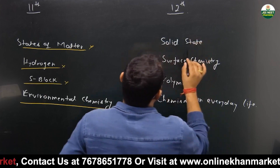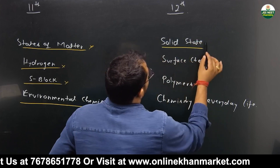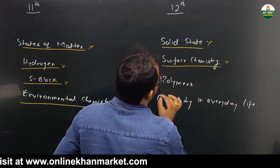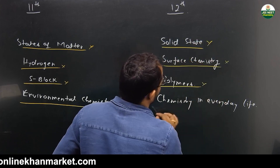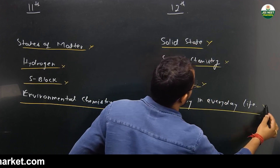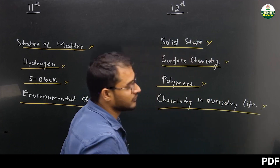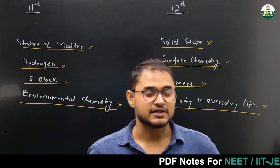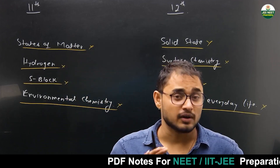The 4 chapters removed from the 12th part are: Solid State, Surface Chemistry, Polymers, and Chemistry in Everyday Life — all completely removed. So a total of 8 chapters have been removed, 4 from 11th and 4 from 12th.